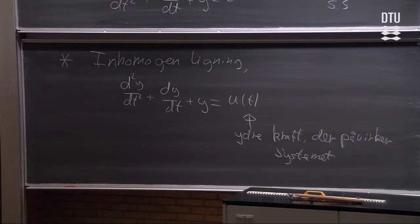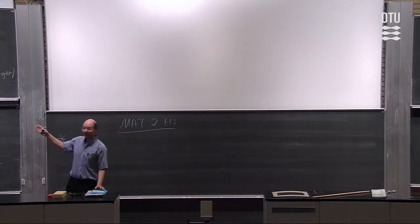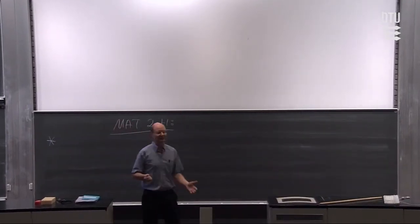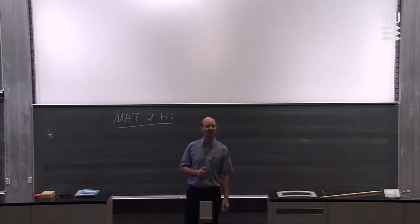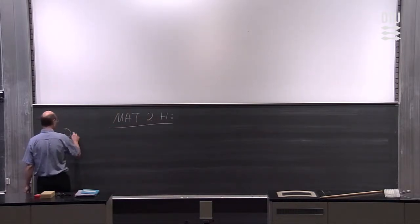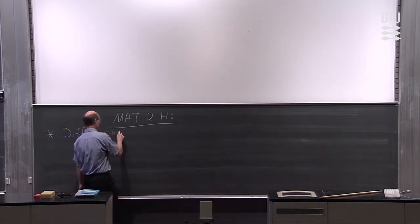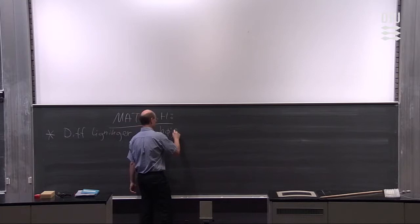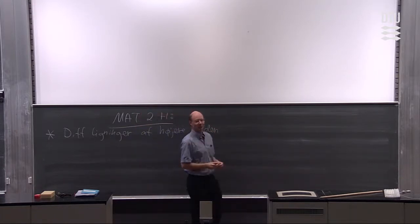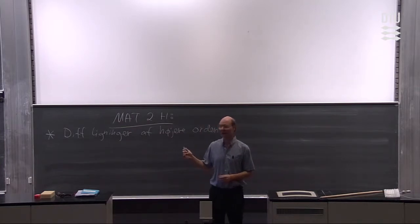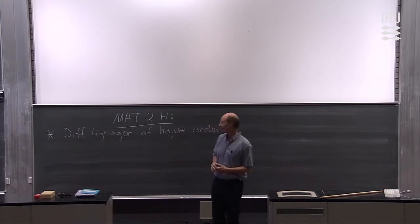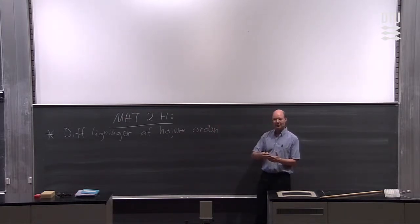Hvad er det så, I mangler at vide? Hvad skal vi videre med i matematik 2? Det vi vil gøre allerførst, er at sige, at det I har gjort i matematik 1, hvor I har begrænset jer til ligninger af anden orden, det behøver vi ikke at gøre. Vi kan gøre præcis det samme for ligninger af højere orden. Det allerførste skridt bliver at kigge på differentialligninger af højere orden. Der er ikke noget i teorien, der vil chokere jer – alle løsningsmetoderne I er vant til, gælder på præcis samme måde for højereordensligninger. Det starter og afsluttes i dag, og det er ment som det element, der knytter matematik 1 sammen med matematik 2.